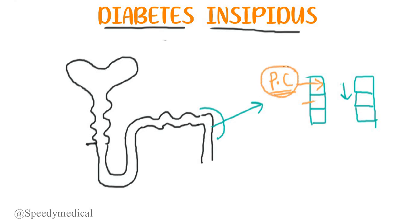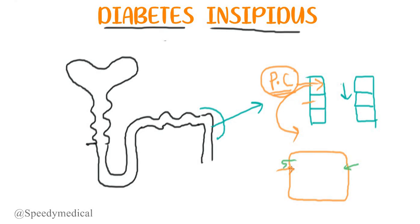Why are these principal cells so important? If I magnify one of these cells, the cell has an apical side and a basal side. On the basal side we have specific receptors called V2 receptors. These V2 receptors are responsive to ADH.